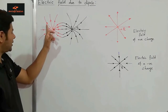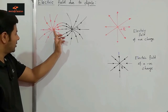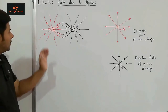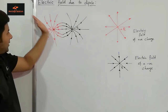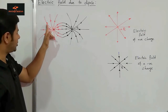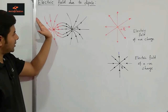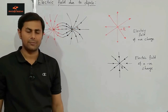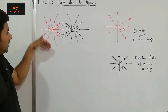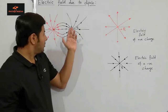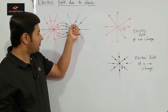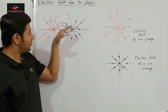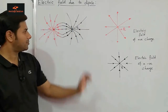Close to the positive charge, the electric field due to the positive charge will dominate, so it is almost radially outwards. But as we go slightly away, the field lines are not exactly radially outwards — if we keep some positive charge there it will get repelled by this positive charge but also attracted by the negative charge, so the electric field lines are curved. Similarly on the negative charge side the field lines are attracted inward while being repelled by the positive charge, giving curved lines.